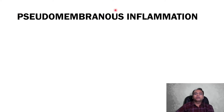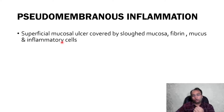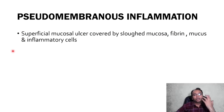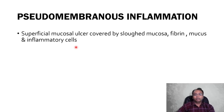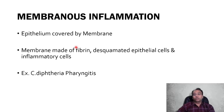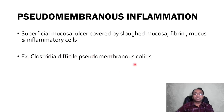Pseudomembranous inflammation: here the true membrane is not present, but it mimics true membrane formation — that's why it is called pseudomembranous. In this type, superficial mucosal ulcers are covered by sloughed mucosa, fibrin, mucus, and inflammatory cells. In membranous inflammation there is no mucus and no ulcer usually, whereas in the pseudomembranous variety, sloughed mucosa, ulcer, and mucus are also present. The common example is colitis by Clostridium difficile.